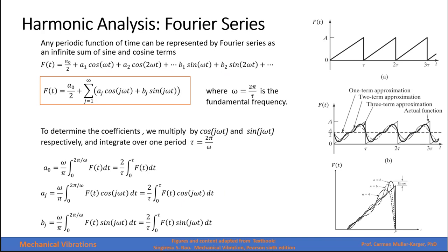Any periodic function of time can be represented as a Fourier series — an infinite sum of sine and cosine terms. So if we have a periodic but not harmonic force, we convert it to harmonic forces because we know the response to harmonic forces. The expression for this conversion gives us coefficients calculated using integral definitions, and we will work through some examples.